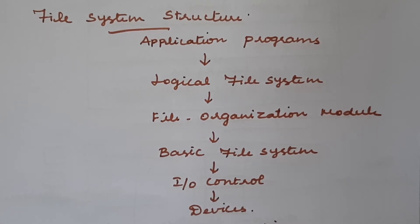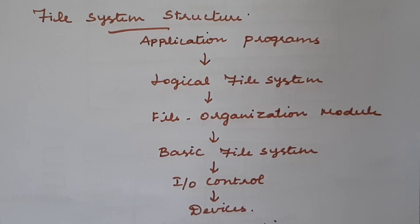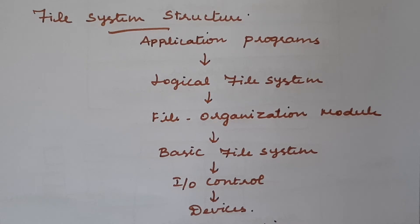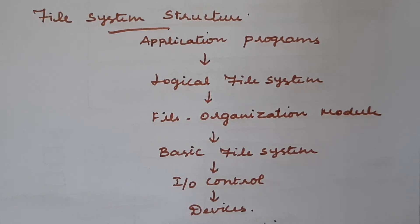The second characteristic is that the disk can be accessed directly, which means any block of information we have in the disk can be accessed directly. The files arranged in the disk can be accessed either sequentially or randomly. If you want to switch from one file to another, it only requires moving the read/write heads and waiting for the disk to rotate.